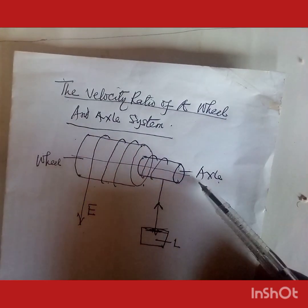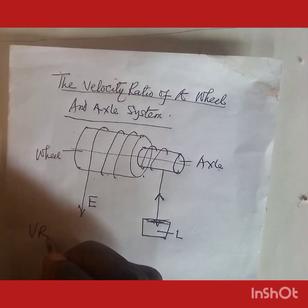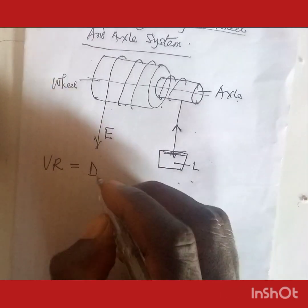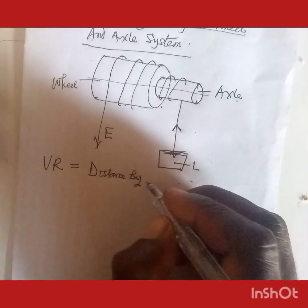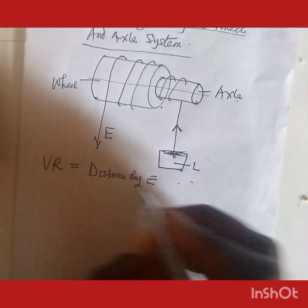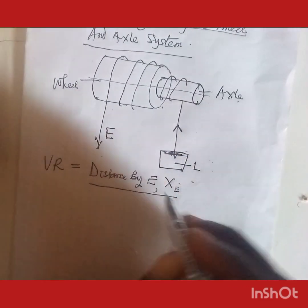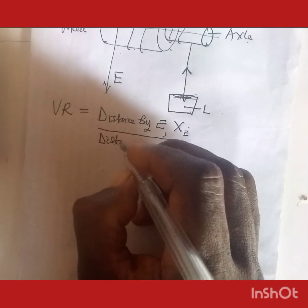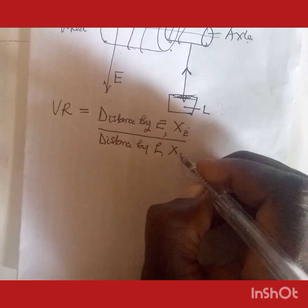Since both of them have the same axis. Now, recalling that the velocity ratio of any machine is equal to the distance moved by the effort, X subscript E, over the distance moved by the load, X subscript L.